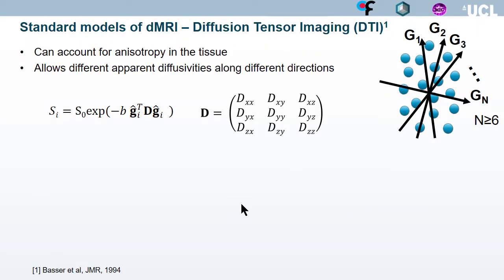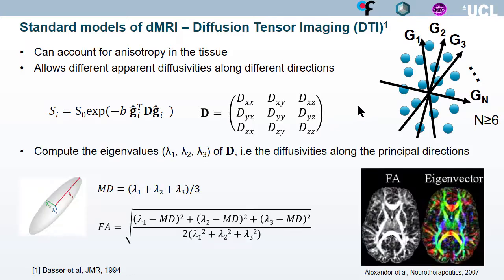We can solve the anisotropy problem by extending the previous formulation to a tensor model — the well-known diffusion tensor imaging — where the signal is written in terms of the gradient strength and the diffusion tensor, which is a 3×3 symmetric and positive definite matrix. To estimate the diffusion tensor, we need at least six different gradient directions. After estimating it, we diagonalize to get the eigenvalues representing diffusivities along principal directions, and then recover metrics widely used in the clinic, such as mean diffusivity or fractional anisotropy.